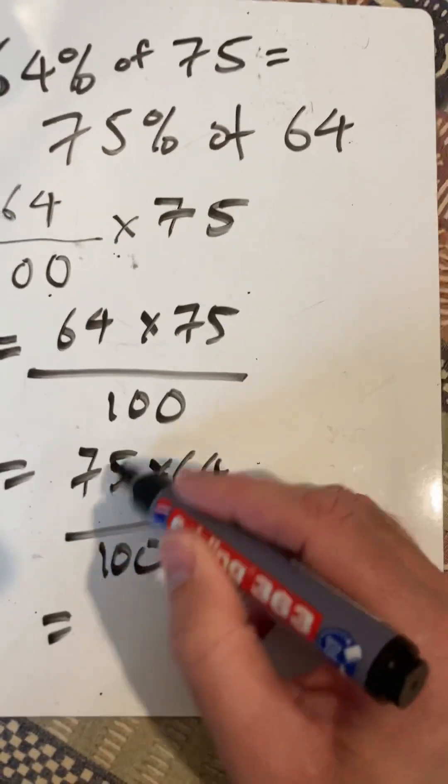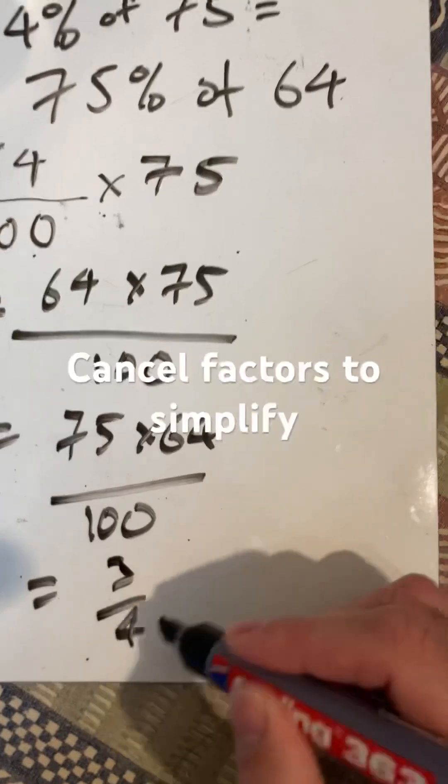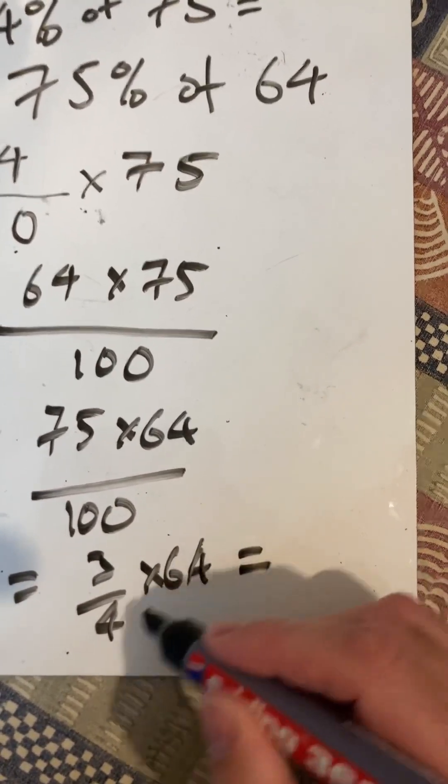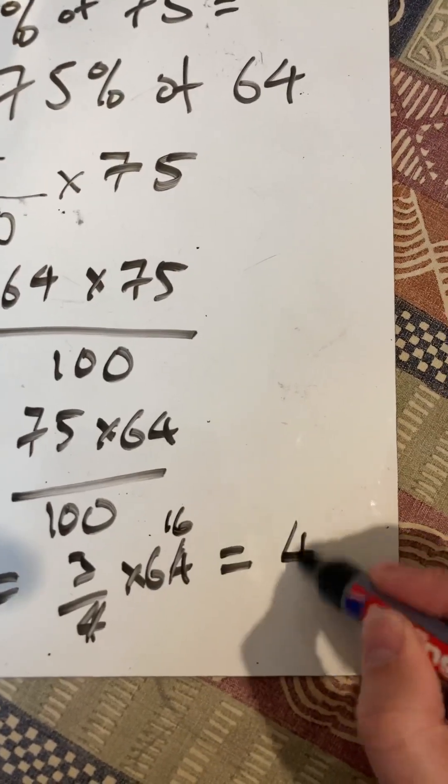And if I cancel those, 75 over 100 is the same as 3 quarters. So I want 3 quarters times 64, which is, divide those by 4, 16, 48.